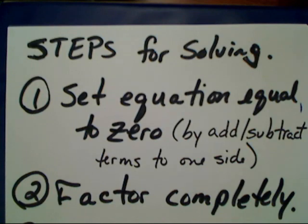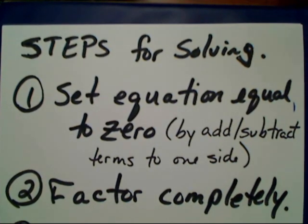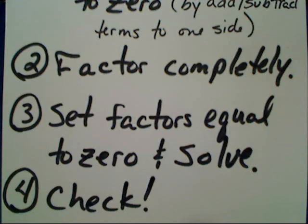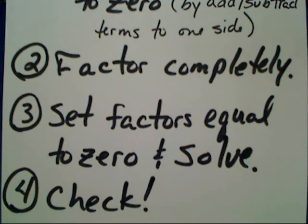So your steps for solving this week: first, make sure your equation is set equal to zero by subtracting or adding terms to one side. Then factor completely. Set those factors equal to zero and solve — that's the zero product property. Then check: show all your work in solving to make sure you didn't make a sign error. Check back in the original to confirm the left side equals the right side. That is why we learn how to factor.